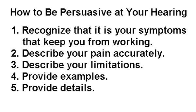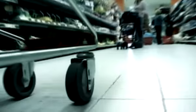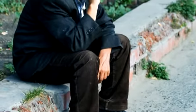Number five: provide details. Say the judge asks, 'How far can you walk?' An answer of two blocks is not as good as one that provides a lot of detail, such as: 'Yesterday, I walked to a store a block and a half from my home. Upon arriving, I had a stabbing pain in my back and soon I was limping. I stopped three times on the return and once home, sat down and elevated my legs before putting the groceries away.'